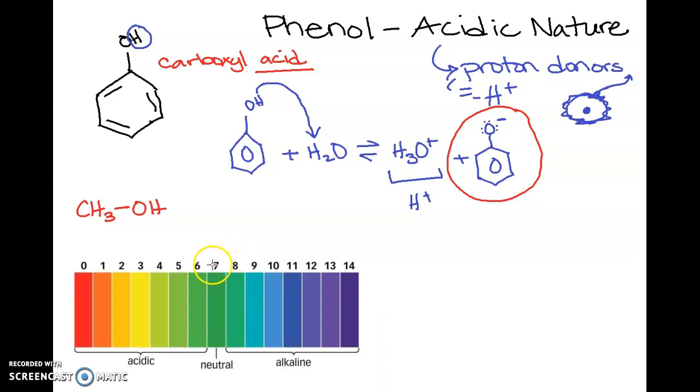And then as the number gets lower and lower, so this is our pH scale, things are getting more acidic. As the number gets higher, it's getting more alkaline or another, that's just another way to say basic.